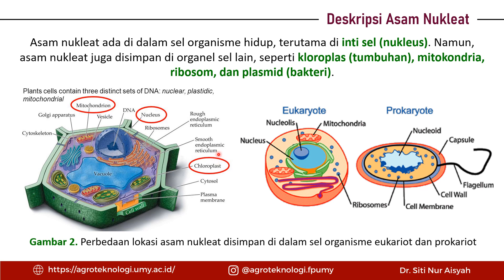Khusus untuk tumbuhan dan bakteri, selain di inti sel, asam nukleat juga disimpan di tempat lain. Pada tumbuhan disimpan di kloroplas, dan informasi genetik yang disimpan di kloroplas sedikit berbeda karena biasanya kaitannya dengan maternal inheritance atau karakter-karakter maternal. Bakteri juga menyimpan asam nukleatnya sebagian di mitokondria, ribosom, dan juga plasmid. Pada organisme eukaryot seperti manusia dan hewan, asam nukleat hanya ditemukan di nukleus atau inti sel saja.